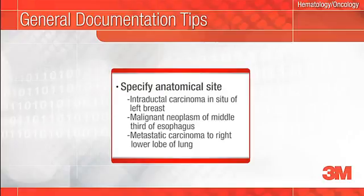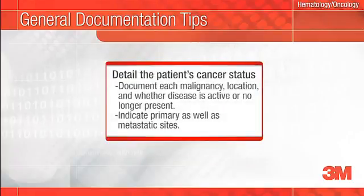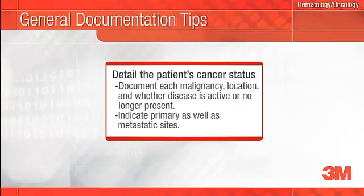Precisely designate anatomical site such as intraductal carcinoma in situ of left breast, malignant neoplasm of middle third of esophagus, or metastatic carcinoma of right lower lobe of lung. Detail the patient's cancer neoplastic status. Document the type of neoplasm such as carcinoma in situ or lymphoblastic lymphoma and whether it is a primary, secondary, or metastatic malignancy when appropriate. It is also important to document the location or locations of all malignant lesions. Indicate for each malignancy and location whether the patient currently has a malignancy or whether it has been eradicated, treated, or is no longer present.